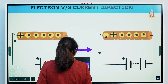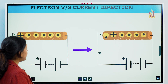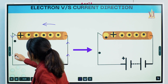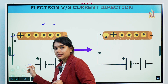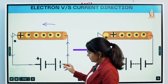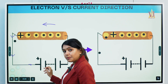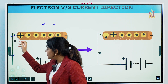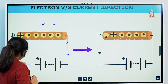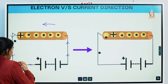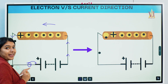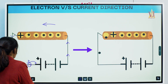Electron versus current direction — first you have to understand: we know electrons flow in a certain direction. There is a deficiency of electrons at one end and an abundance at the other. Electrons will try to compensate. When electrons are there and one electron jumps, it creates a vacant seat — indicating a positive region at that spot.